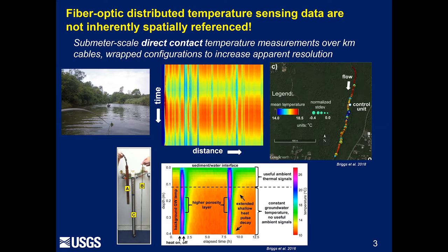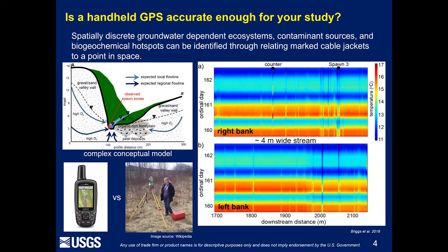Geo-referencing is quite important. So how are you going to do it? You can buy a cable that has a marking on the jacket indicating distance along the stream that you can then reference to a known point. Sometimes a handheld GPS — and these have gotten better over time — is good enough. If you're putting cable down the center of a stream and just trying to get a rough picture of what's happening, a handheld GPS might be enough. Or you may need to survey these points in with an RTK GPS, or in this case a total station, as shown in the image. It really depends.